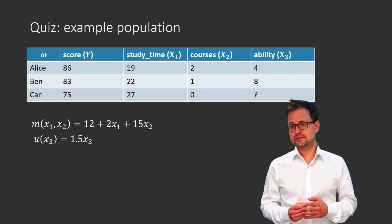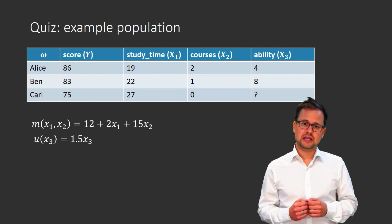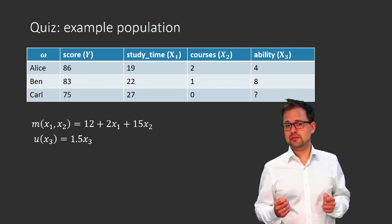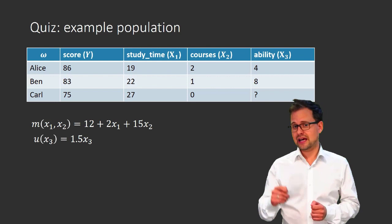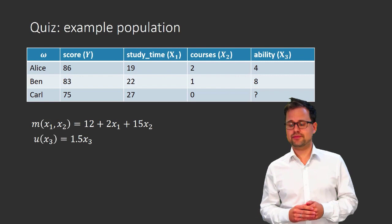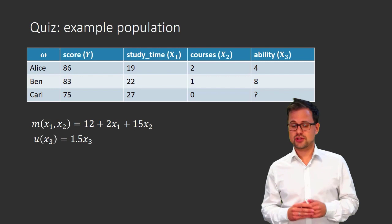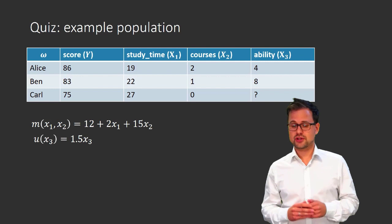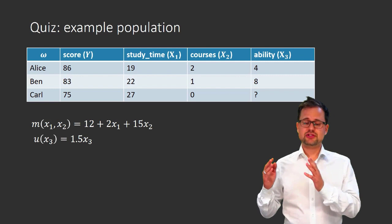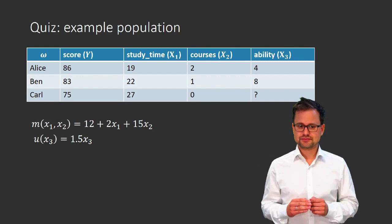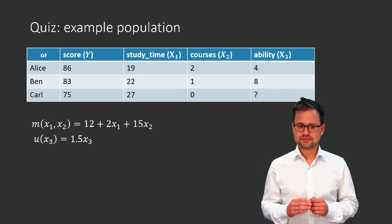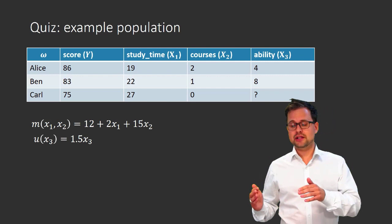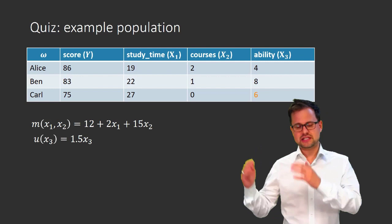Now let's turn to Carl. We know Carl's exam score — it's 75 — but we don't know his mathematical ability. However, we have all the information needed to figure it out. Here's how: Carl's exam score is 75, subtract the intercept 12, leaving 63. Then subtract 2 times 27 — so 54 — giving 63 minus 54 equals 9. Then two-thirds of 9 is 6, which is Carl's mathematical ability.